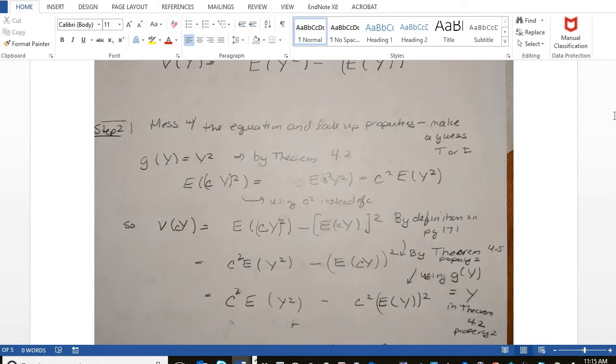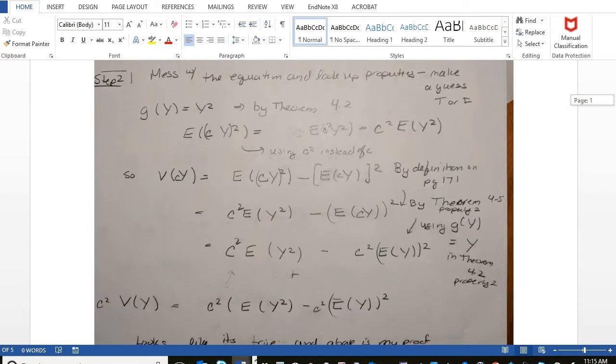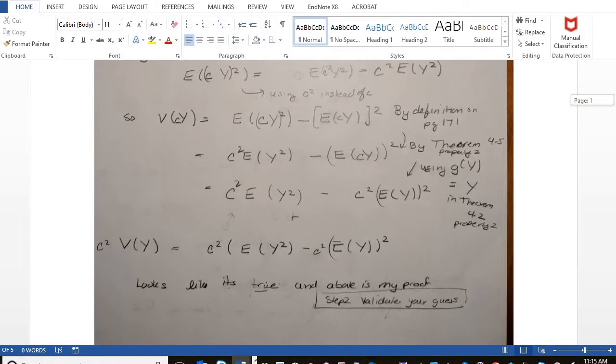You have every one of these theorems I'm using. I'm citing them. I even tell you what property I'm using from that theorem so that it's very clear where it's coming from. And then, you know, again, this was my scratch work that I put arrows on to make the final proof. And I say, it looks like it's actually true. And so the above proof is my proof for that statement since it's true.